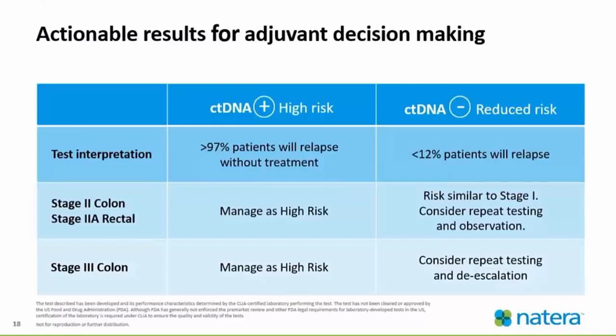Actionable results for adjuvant decision-making are summarized here. If a patient displays positive ctDNA, they are considered high risk — greater than 97% of patients will relapse without treatment. For Stage 2 colon and Stage 2A rectal cancer patients, we would manage these patients as high risk, and the same for Stage 3 colon cancer patients. For ctDNA negative patients, they are considered at reduced risk, with less than 12% chance of relapse. For Stage 2 colon and Stage 2A rectal patients, we would manage them similarly to a Stage 1 cancer patient and consider repeat testing and observation. For Stage 3 colons, we can consider repeat testing and de-escalation.